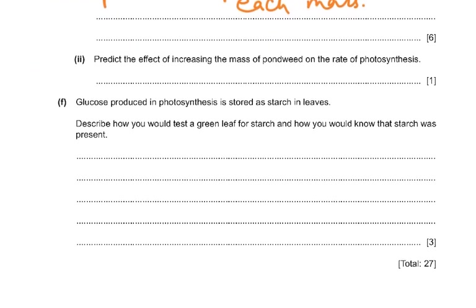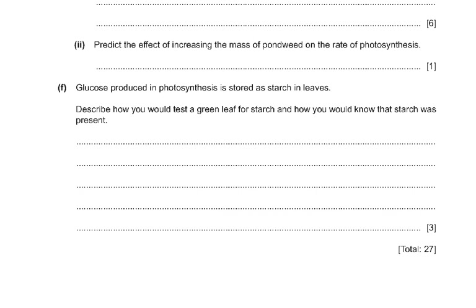Predict the effect of increasing the mass of pondweed on the rate of photosynthesis. The rate would increase because more mass means more cells, more chloroplasts, more chlorophyll, more light absorbed, and therefore more oxygen produced. 150 grams will have more cells than 100 grams - more cells means more chlorophyll, more chloroplasts, more light trapped, and more oxygen produced.